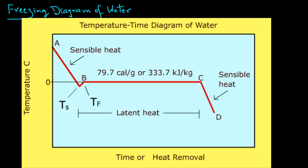A total of 79.7 calories per gram or 333.7 kilojoules per kilogram must be removed to completely convert water into ice. Because this change of phase occurs at a constant temperature of 0 degree Celsius, the heat removed is called latent heat of fusion.